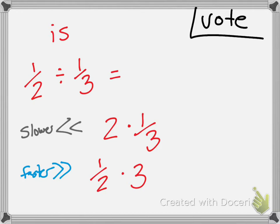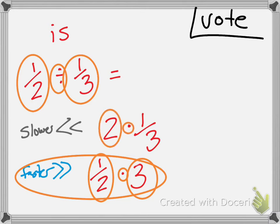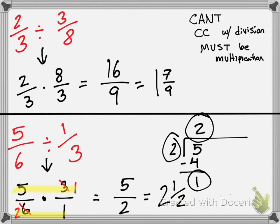Take a vote: one-half divided by one-third — is it two times one-third or one-half times three? The majority voted for one-half times three — and yes, you are correct. We do our Kentucky Chicken Fried — keep, change, flip. And just as a reminder, you cannot cross-cancel with division; it must be multiplication. Don't even start to think about cross-canceling until you're multiplying.